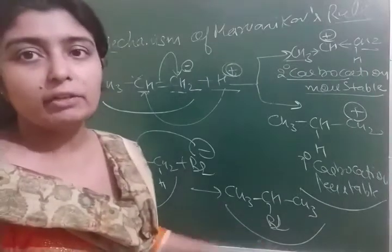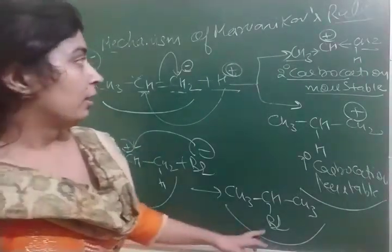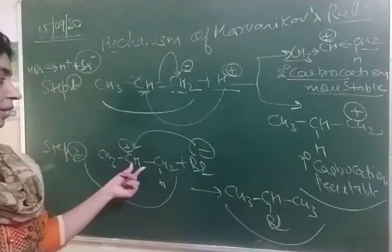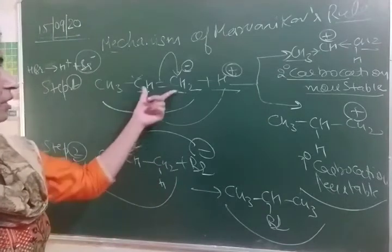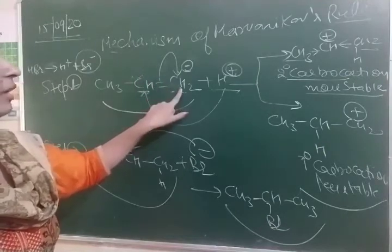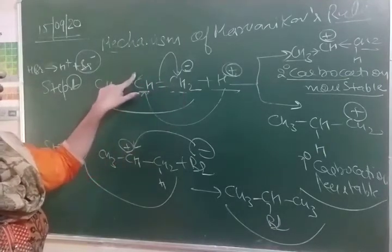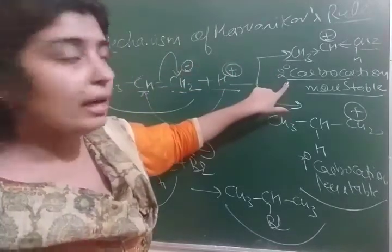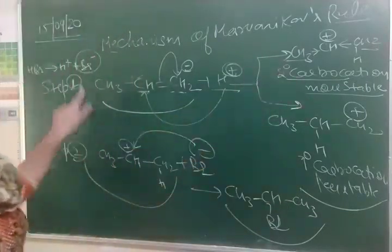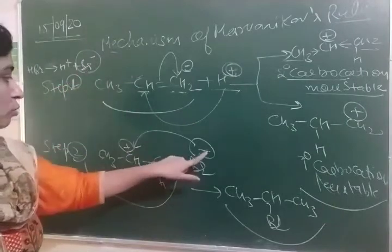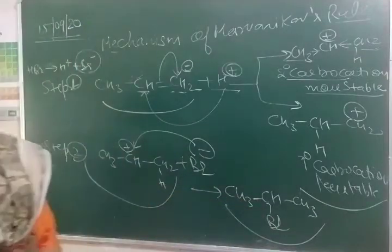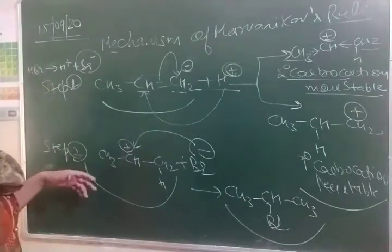So ultimately Markovnikov's statement proves that the negative part goes to that carbon atom where there are fewer hydrogen atoms around the double bond. After heterolytic cleavage, H⁺ may move to either side. If H⁺ attacks this side, then a positive charge appears on this carbon — this is called secondary carbocation. Secondary carbocation has more stability compared to primary carbocation. So the negative part (Br⁻) in HBR goes to the second carbon atom and makes 2-bromopropane. This is the product.